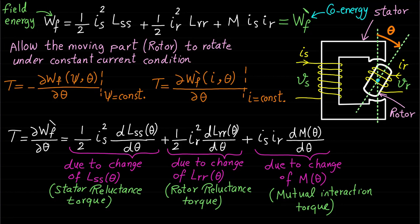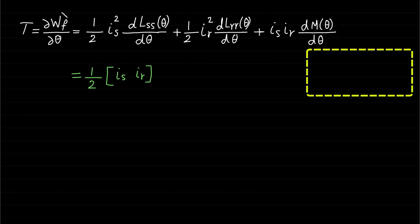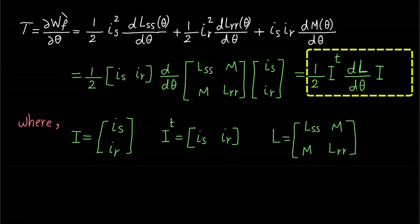In the upcoming lecture, we will take some examples to show the impact of the machine geometry on developing the electromagnetic torque T. The matrix form representation of this torque expression is T = ½·I_transpose·(dL/dθ)·I, where capital I, I_transpose, and capital L are as shown.